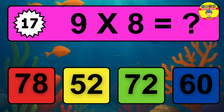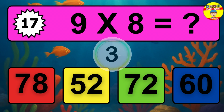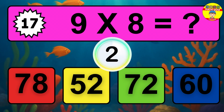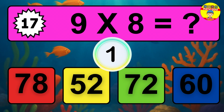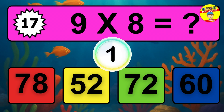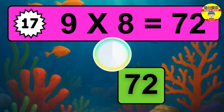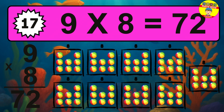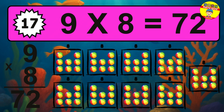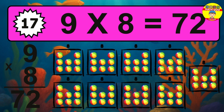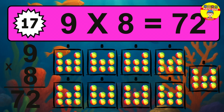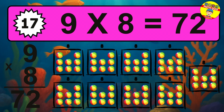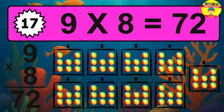Question 17. 9 times 8 equals what? The answer is 9 times 8 is 72. To calculate, we have 9 groups with 8 balls each one. So, how many balls do we have? 72 balls.